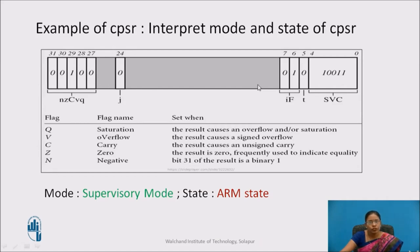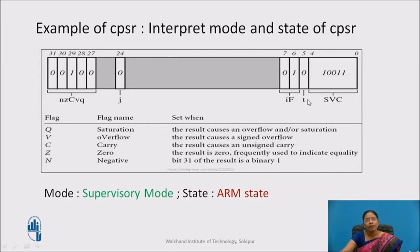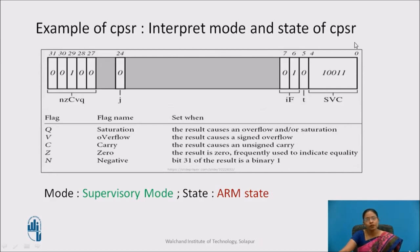An example of CPSR is shown. From these bits set in CPSR, we need to find out which mode and state the processor is in. J equals 0, indicating the processor is not in Jazelle state. The T bit is set to 0, indicating the processor is in ARM state. Looking at the mode bits, these bits indicate that the processor is in supervisor mode. In this way, we can find out the mode and state from the CPSR, and similarly write the mode and state when the contents of the CPSR register are known.